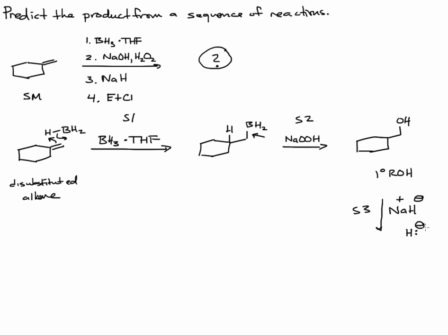This is going to act as a base, and bases will abstract hydrogens. If you look at this compound you have a couple different types of hydrogen. So which one gets abstracted? It's going to be the one with the most acidic pKa, the one bonded to oxygen. This alcohol has a pKa of around 15. So that hydrogen gets abstracted. The byproduct is hydrogen gas which escapes the reaction.